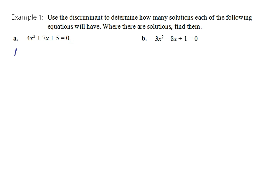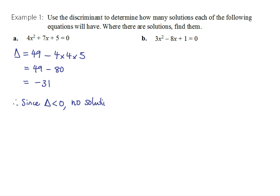We're going to work out the discriminant before anything else. The discriminant is b squared minus 4ac, so 49 minus 4 times 4 times 5. That's 49 minus 80, which gives negative 31. It doesn't really matter how big it is — it's negative. Since the discriminant is negative, we're going to have no solutions, so no need to go any further.